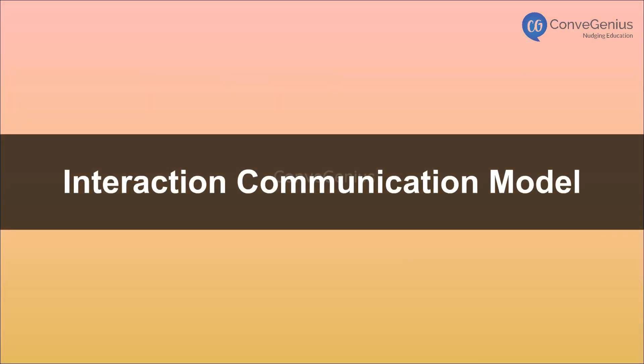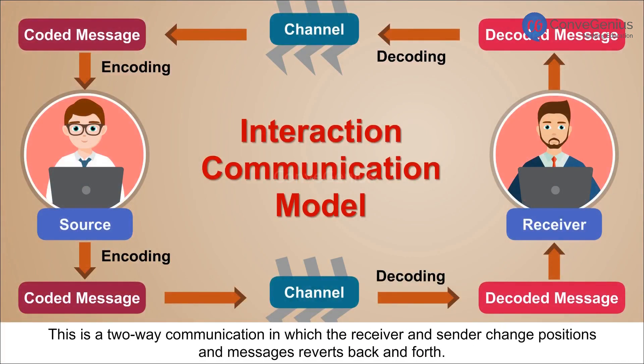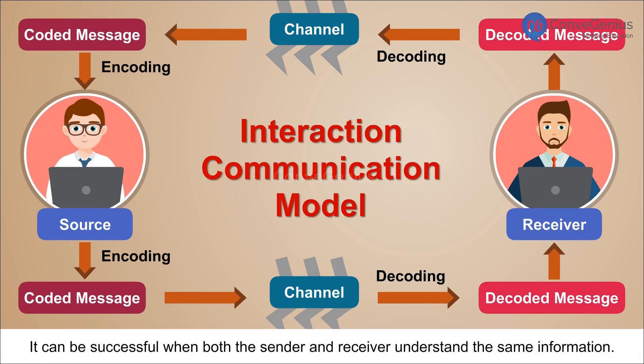The Interaction Communication Model is a two-way communication in which the receiver and sender change positions and messages revert back and forth. It can be successful when both the sender and receiver understand the same information.